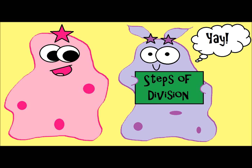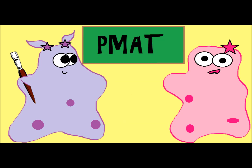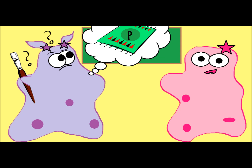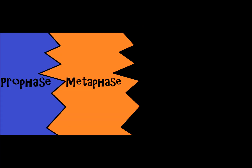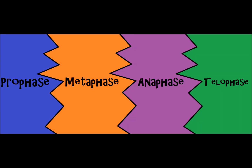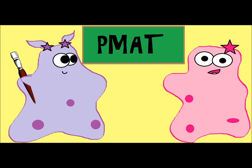Let's get right into the mitosis stages. I like to tell students to remember PMAT — a little acronym to help you remember: P is for prophase, M is for metaphase, A is for anaphase, and T is for telophase. So remember PMAT — that's the stages in order.